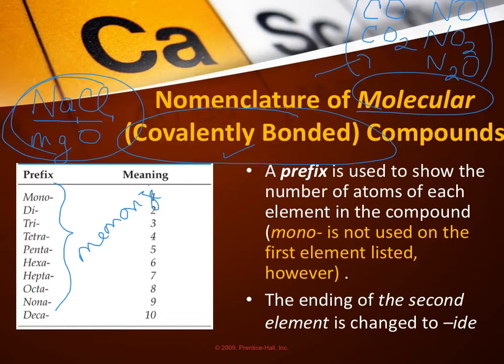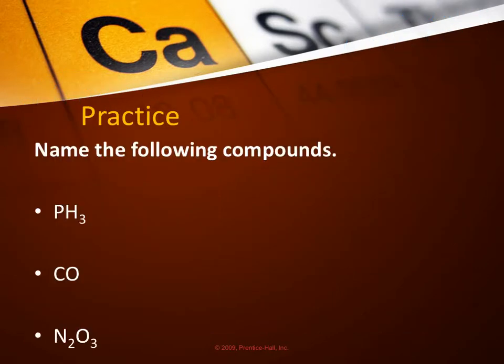One thing that's the same in naming a covalent compound as it was for ionic is the second part of the name has a suffix of -ide. There are no polyatomics in covalent. Polyatomics are ions. There are no ions in covalent compounds.